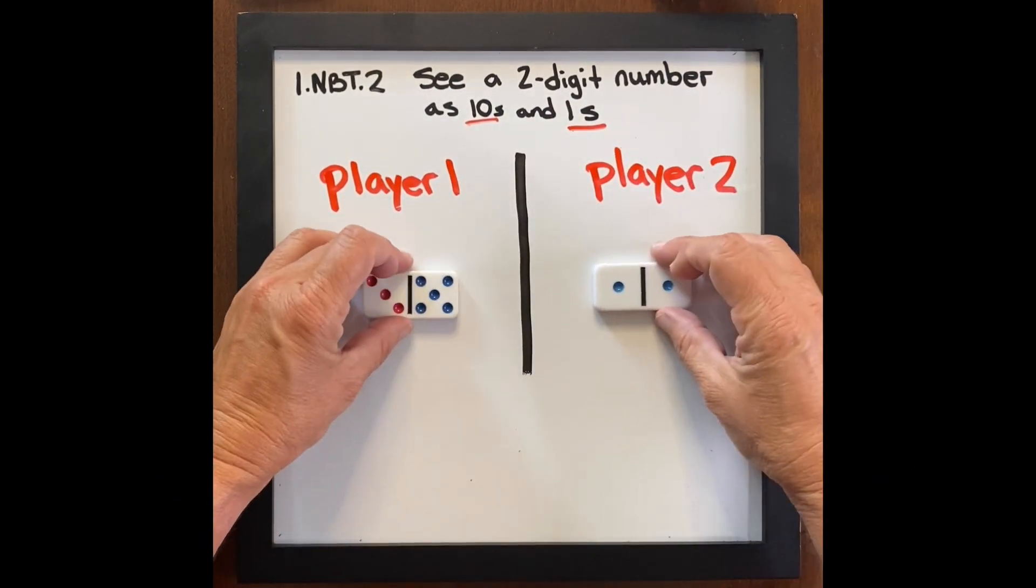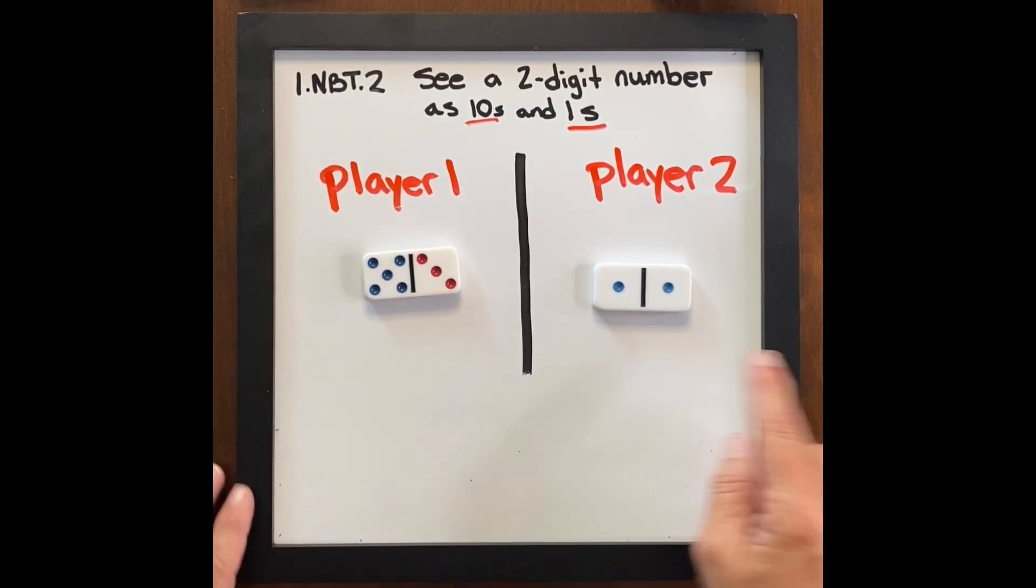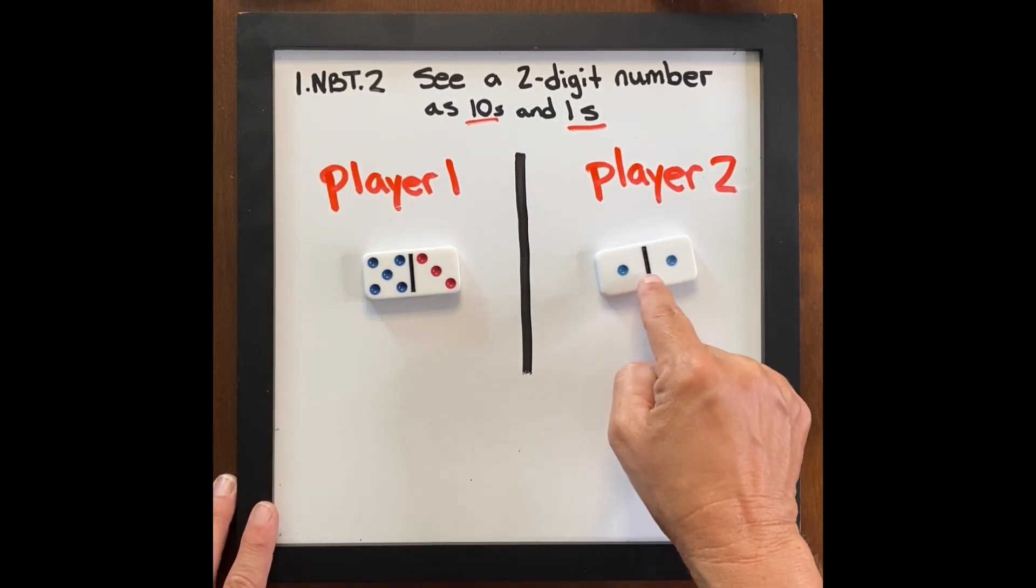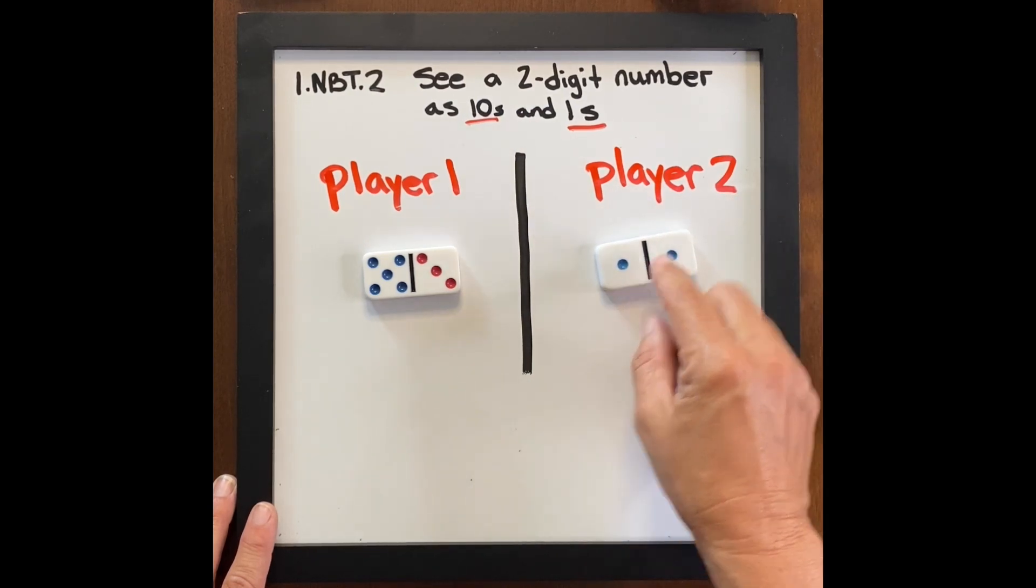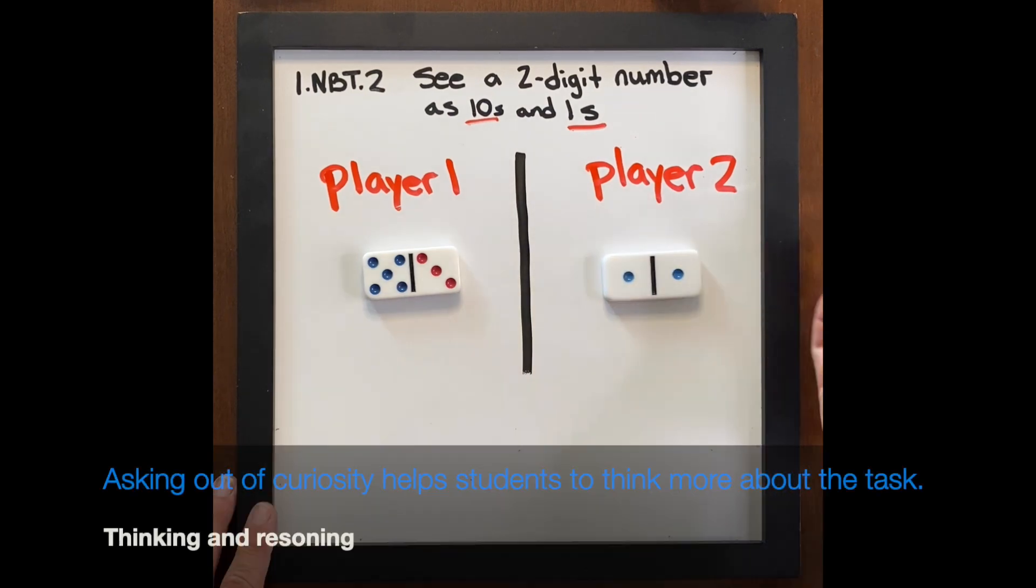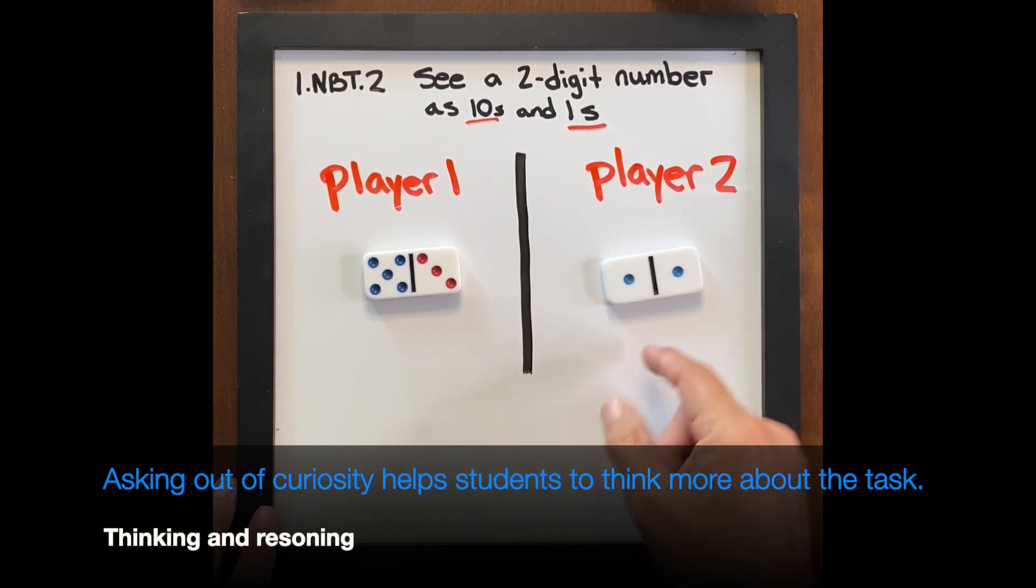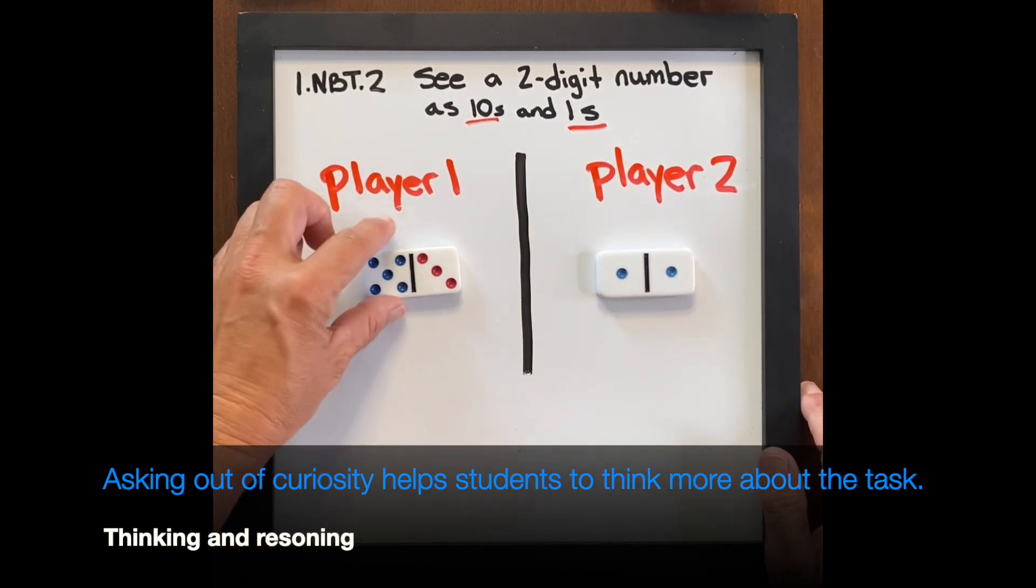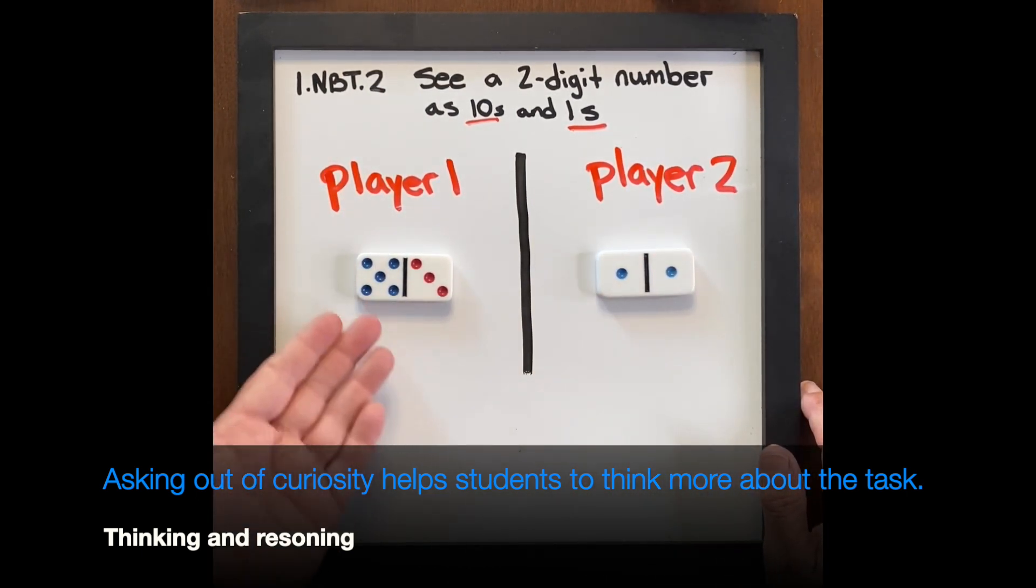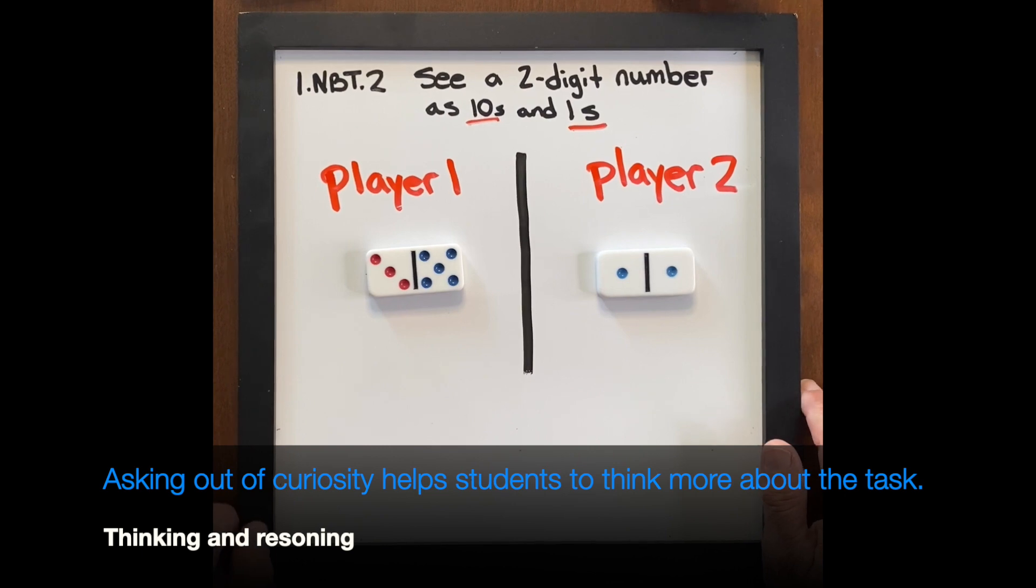Do one last one. And here, again, great conversation to ask. Could you have changed your number? Would your number have changed at all, player two? And why? And here we're looking for a language of the one in either position. It doesn't matter. It's still going to be ten. One ten one. And here you could ask player one, how did you win with five tens three? Or could you have won with three tens five? That's a great question as well.